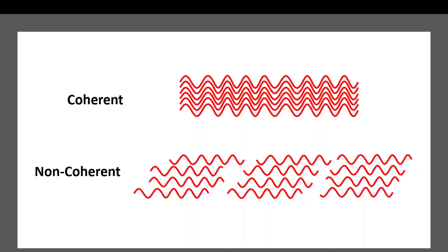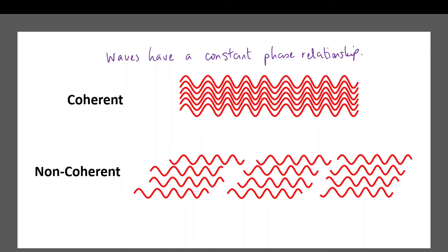One important consideration in superposition or interference is whether the waves are coherent. Two waves are considered coherent when they have a constant phase relationship. You read in many places that two waves of the same frequency are coherent — that is true, but having the same frequency is more a consequence of coherence rather than its definition. A constant phase relationship doesn't mean they have to be in phase; they can be in antiphase and be coherent, as long as that phase relationship doesn't change over time. They do need to be the same frequency, but it's the phase relationship that matters.